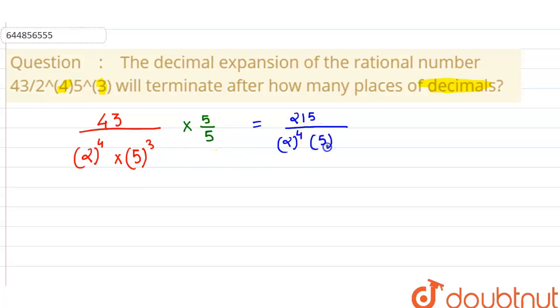And 5 to the power 3 plus 1, so it is going to be 5 to the power 4. We know that if the powers are the same and bases are different, we can multiply them easily. So it is going to be 215 divided by 10 to the power 4.